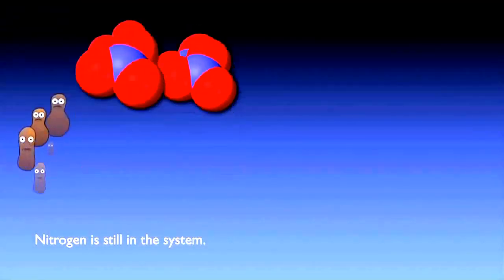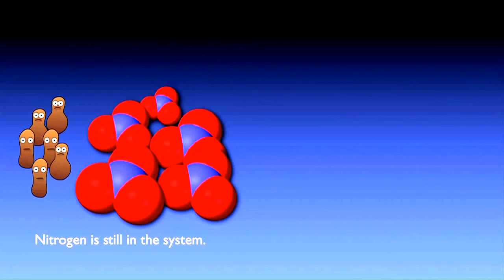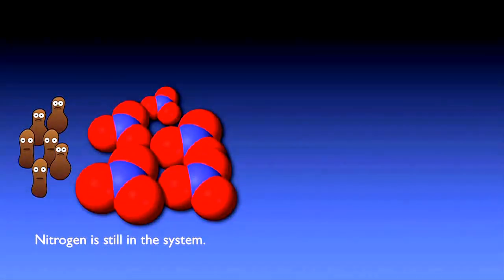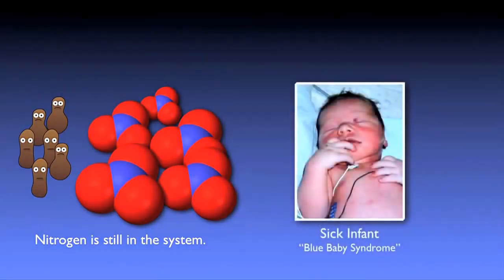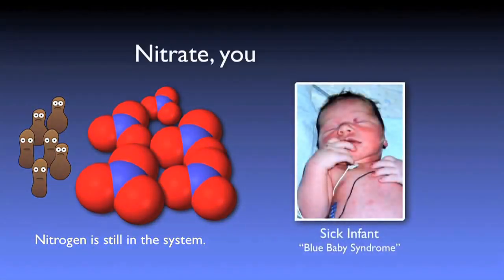After nitrification, the nitrogen is still in the system, mostly as part of the bugs and in the form of nitrate. Though not as toxic as ammonia, nitrates can still contribute to eutrophication, and if released into a source supplying drinking water, can endanger human populations — specifically infants — causing what is known as blue baby syndrome by interfering with blood oxygenation.